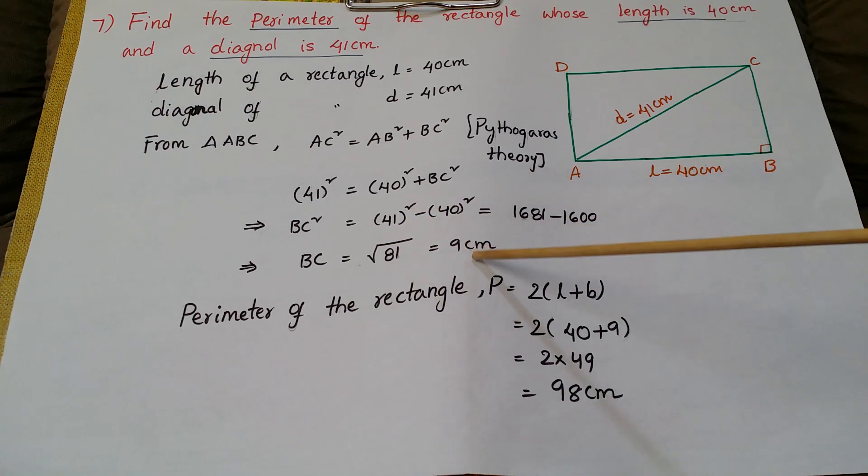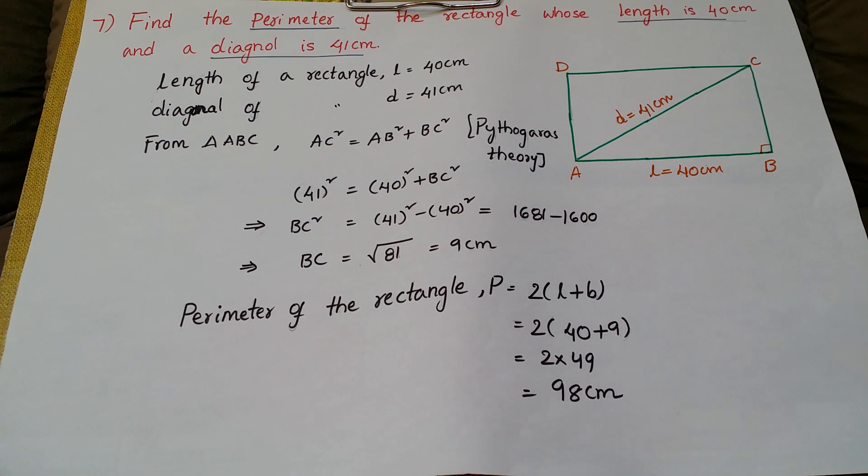So now we have to calculate perimeter of the rectangle. We know this formula: P is equal to 2 into L plus B. Then just apply L and B here: 2 into 40 plus 9, 2 into 49, that is 98 centimeters.